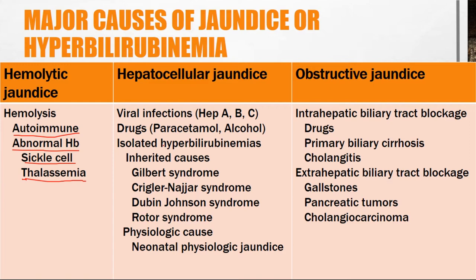In hepatocellular jaundice, causes include viral hepatitis, drugs such as paracetamol, and alcohol. There is also something called isolated hyperbilirubinemia, where bilirubin levels are increased with no other abnormality in laboratory parameters. Causes of isolated hyperbilirubinemia include inherited causes — Gilbert syndrome, Crigler-Najjar syndrome, Dubin-Johnson syndrome, and Rotor syndrome. In obstructive jaundice, there is intrahepatic biliary tract blockage due to drugs like nitrofurantoin or anabolic steroids, primary biliary cirrhosis, or cholangitis. Extrahepatic biliary tract blockage can be due to gallstones, pancreatic tumors, or cholangiocarcinoma.